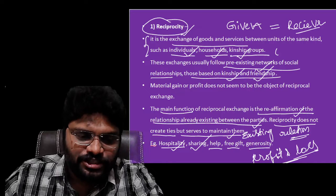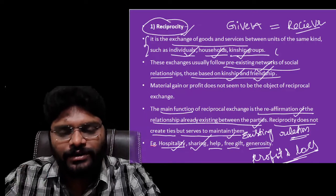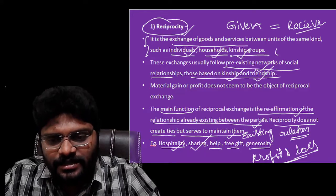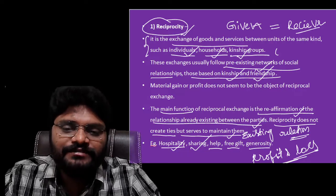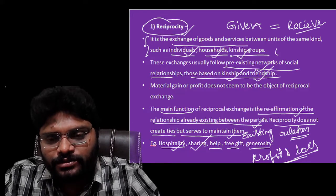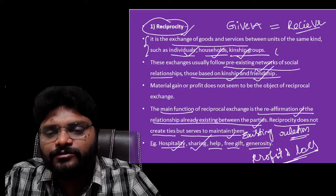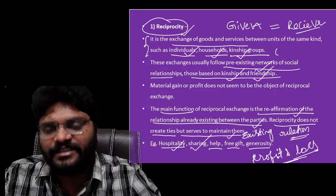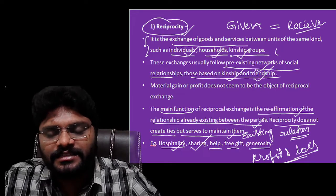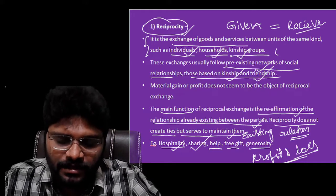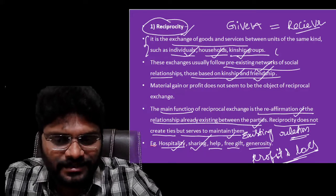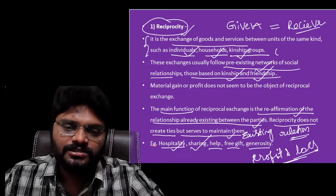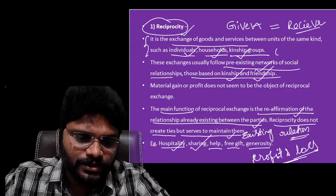Here is a practical example: if one of your relatives, say your mother's brother or mother's brother's children, visits your home, you provide food and lodging for them without charging any money. You don't expect payment for providing food or accommodation. That is called reciprocity. Now we will move into the second concept.